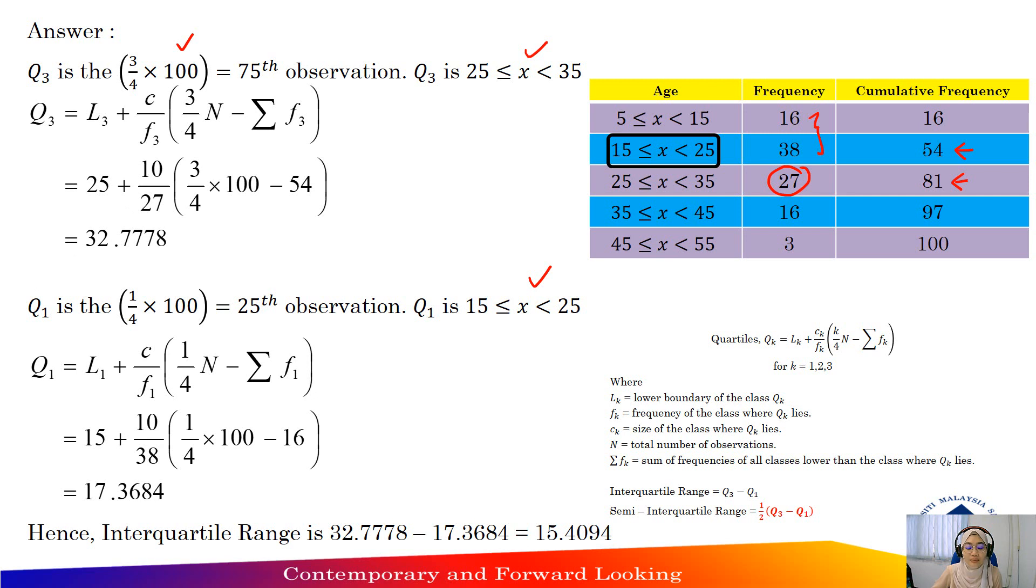So the lower boundary will be 15. And then 10 divided by frequency times one-quarter times 100, and the frequency before the class Q3 is 16. You will get 17.3684. And to find interquartile range using formula Q3 minus Q1, you will get 15.4094.